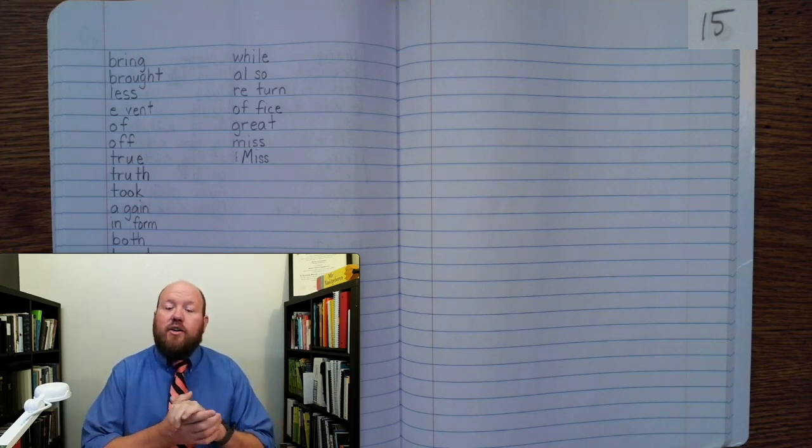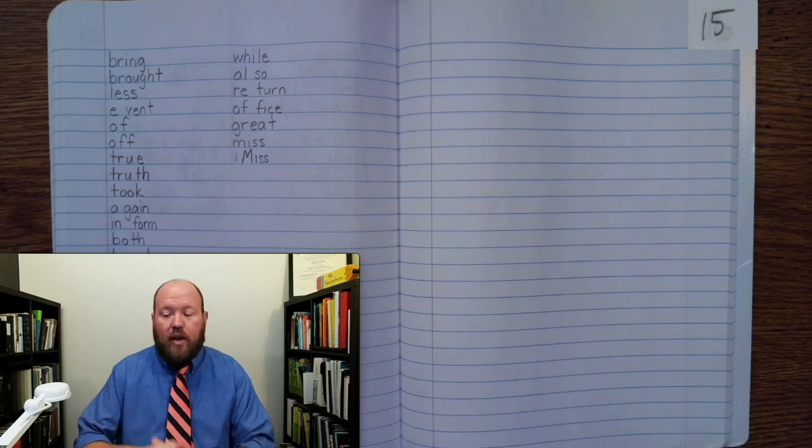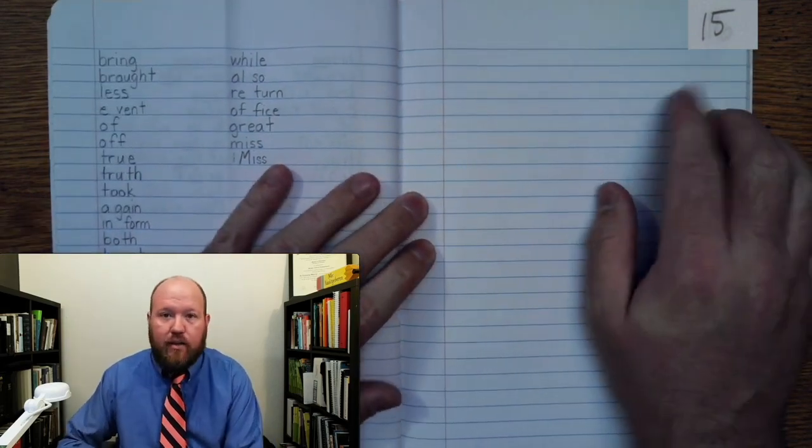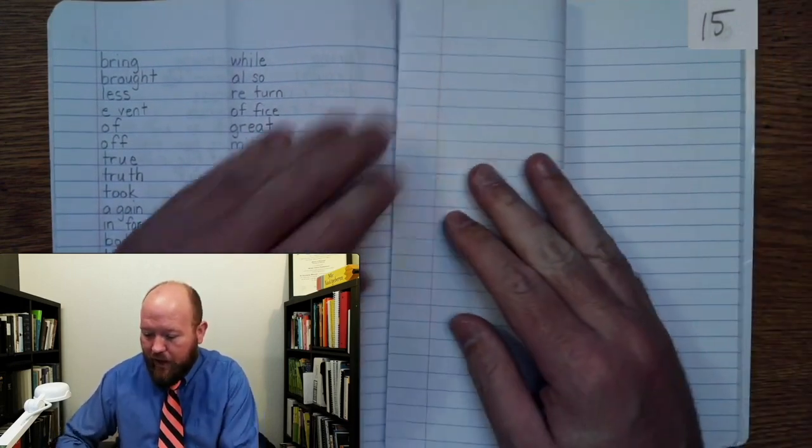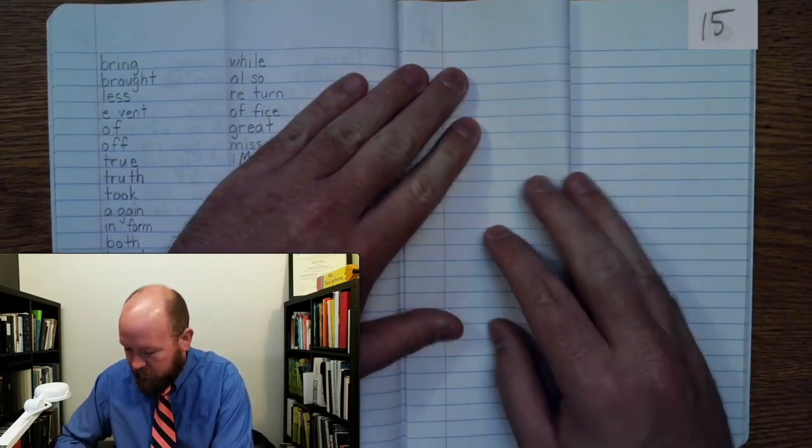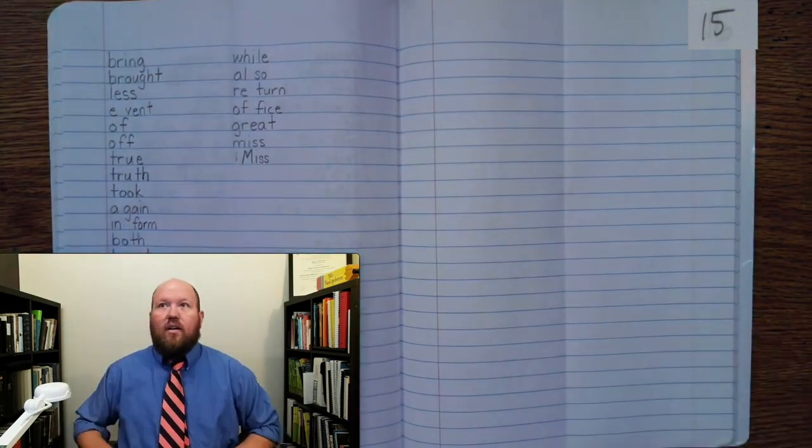When we write the words, make sure you use your very best handwriting including all the spacing rules and markings. Now make sure we're on page 15 in the middle portion of our spelling book. Let's go and take this page and fold it neatly in half by lining up the red lines.